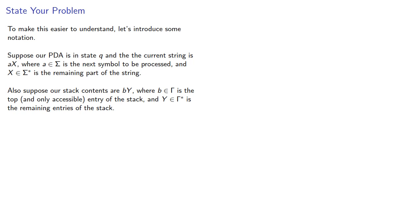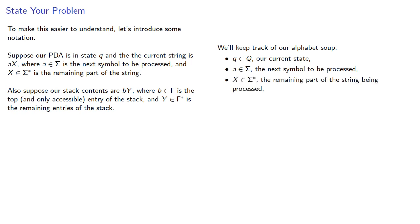And we'll keep track of our alphabet soup. So, remember, q is our current state, a is the next symbol to be processed, x is the remaining part of the string to be processed, b is the top symbol in the memory stack, γ is the remaining entries in the memory stack, and now we're going to do something.